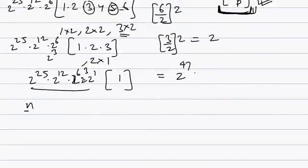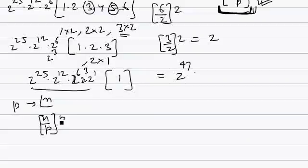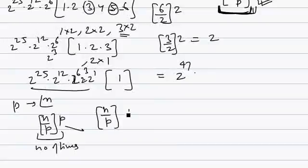If we have to find prime p in n factorial, then n by p into p is the greatest number which will have p as a factor. But we have to find how many times p is there. This much number of times is the number of times p in the whole product. We want n by p: this much number of times p is there. The remaining series would be after taking p common: 1 into 2 into 3 into 4 goes on.